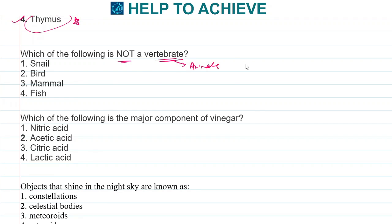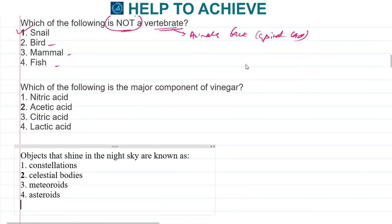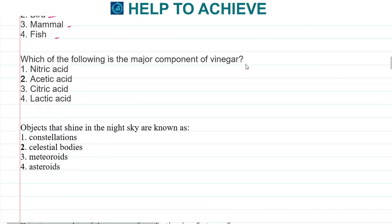Which of the following is not a vertebrate? Vertebrate means animals which have backbones, the spinal cord. Birds, mammals, and fishes have the spinal cord. Snail, which is a small animal, does not have a vertebrate, does not have a spinal cord. The correct answer is snail.